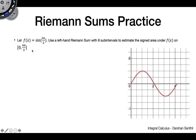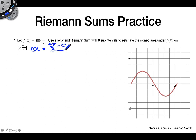First problem: we have f(x) equals sine of 3x over 2. We're going to use a left-hand Riemann sum with 8 subintervals to estimate the signed area from 0 to 4π/3. We start by finding delta x, which is (4π/3 minus 0) over 8 — that's b minus a over n. This comes out to π/6, because 4 and 8 cancel to give one half, and π/3 times one half is π/6.